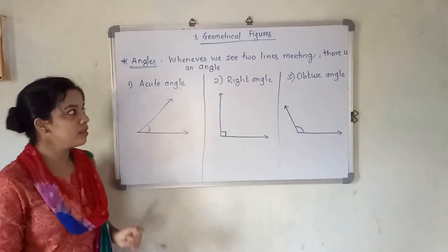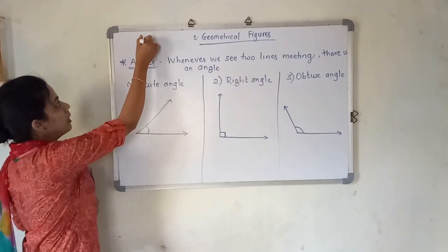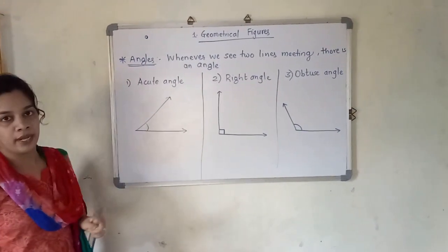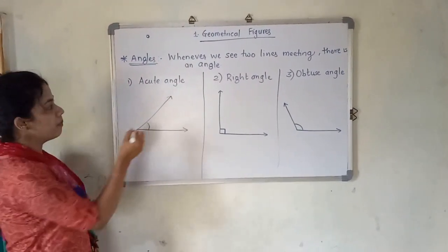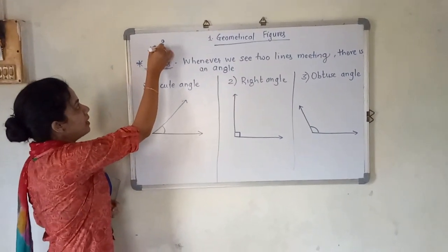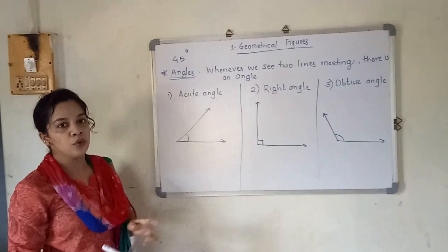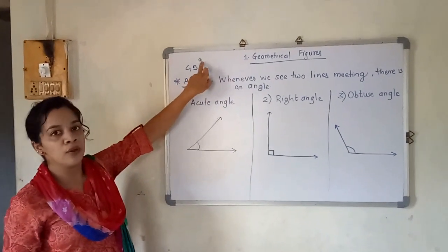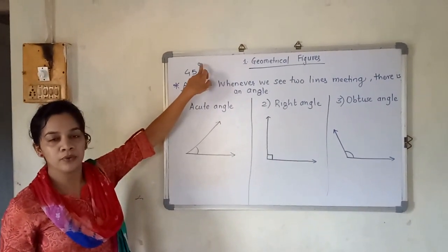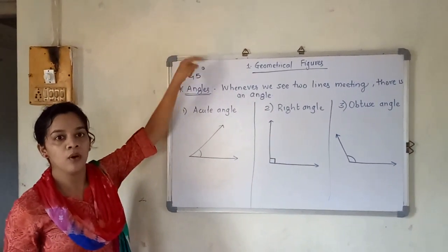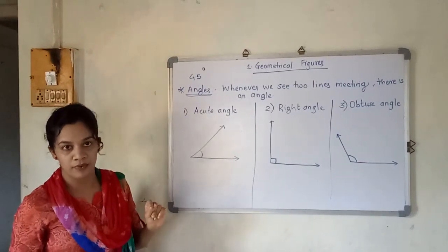Degree is denoted by a small superscript 'o' symbol. For example, if an angle is 45 degrees, you are supposed to write the degree symbol over the top of the number.